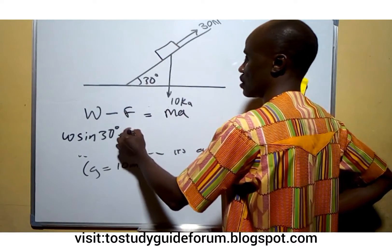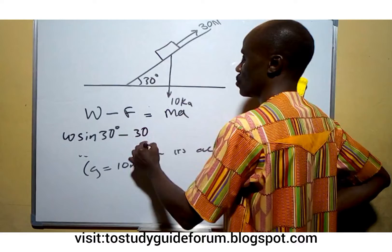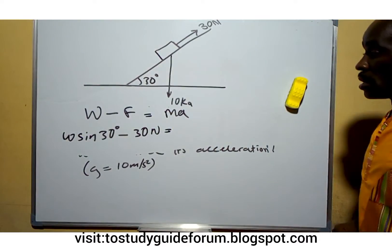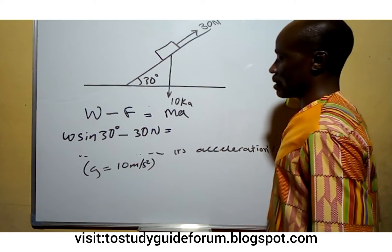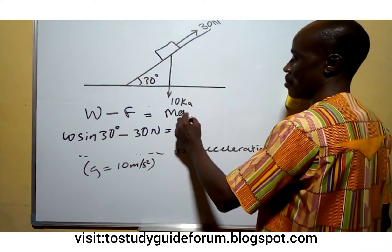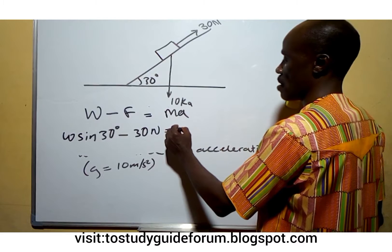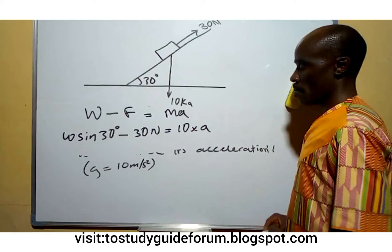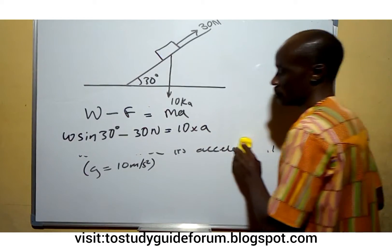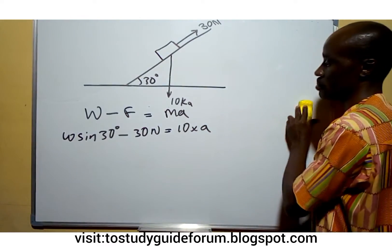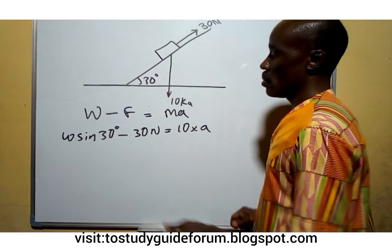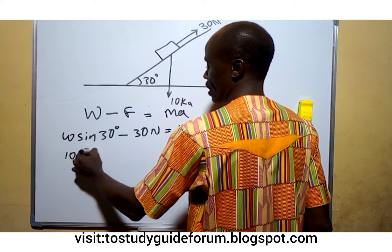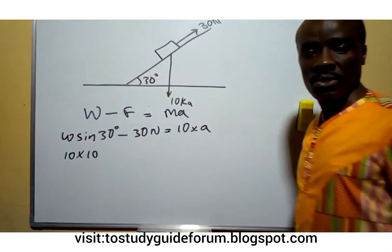With m being the mass, we have 10 times a. So the weight here is the same thing as 10 times g, which is the acceleration due to gravity, and then multiply by sine 30 degrees.